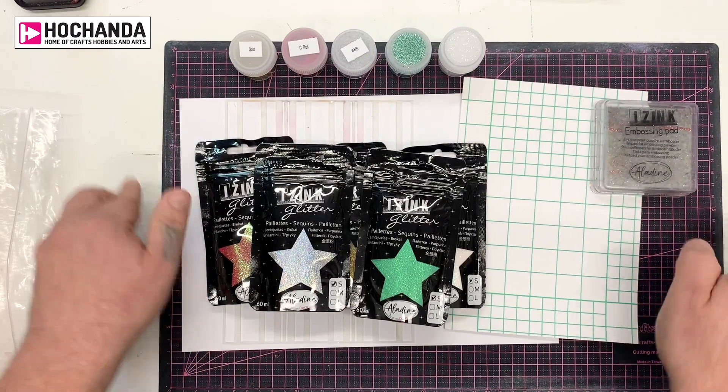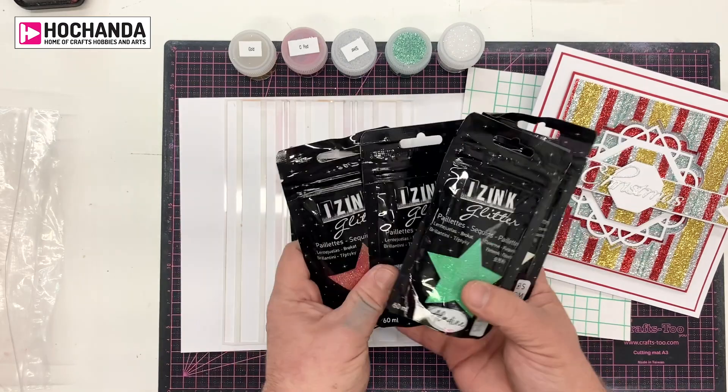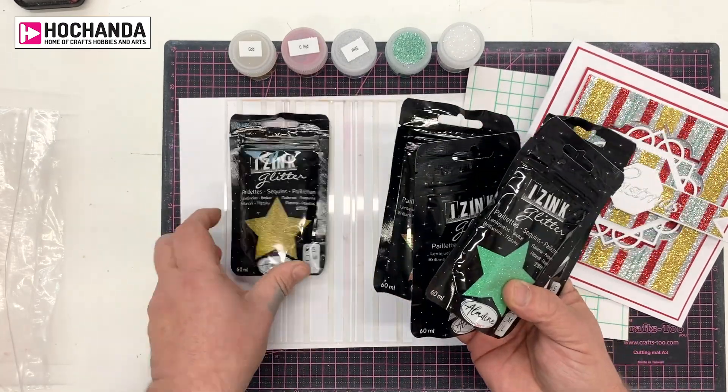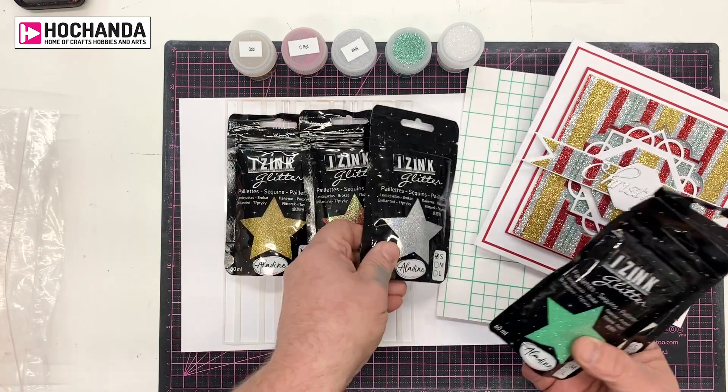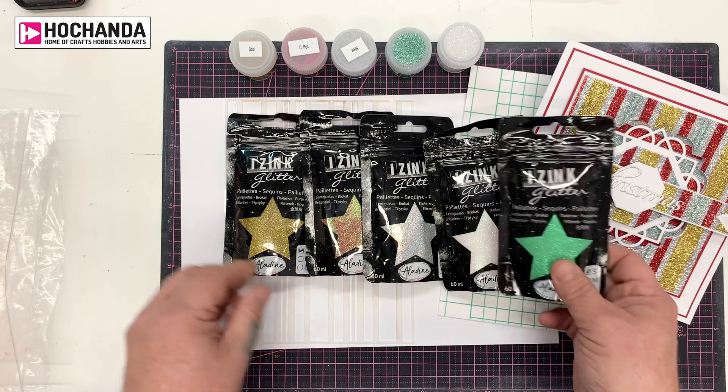So I'm going to bring in the materials that I need to do this. To start with, the glitters that I'm using are the new Isink glitter pack. This is the Christmas pack. And in this you get the gold, you get the red, you get the silver, you get the white, and you also get the green.